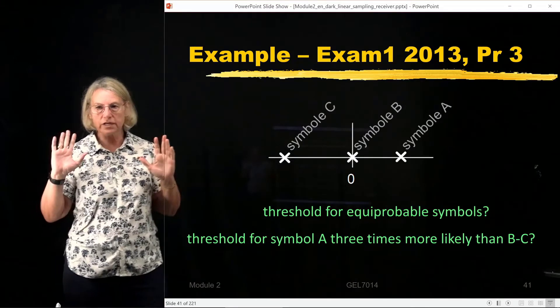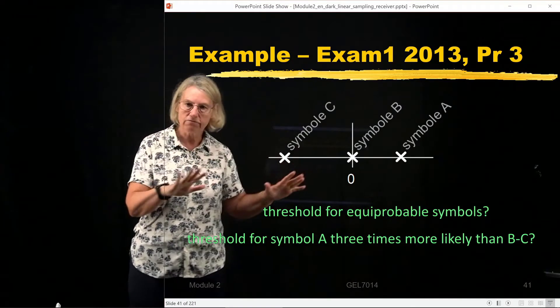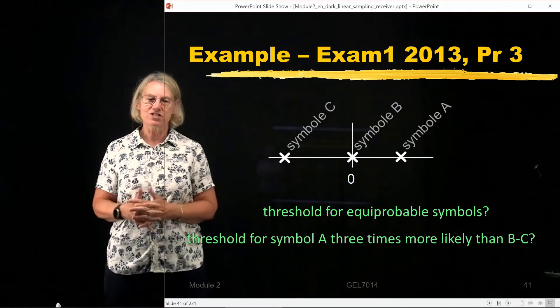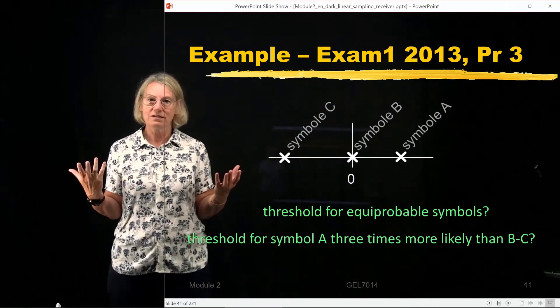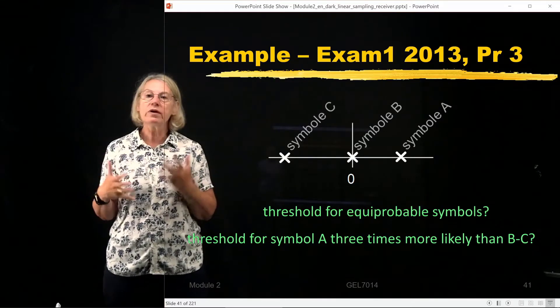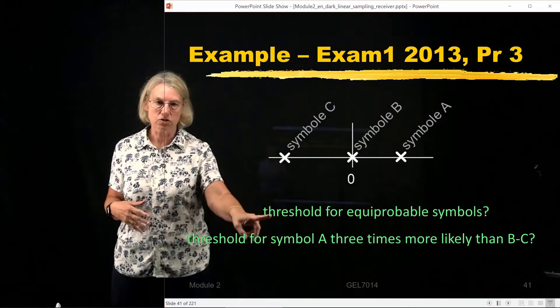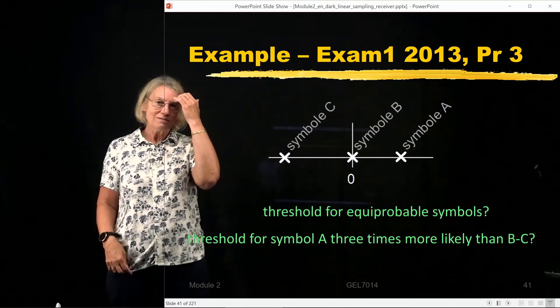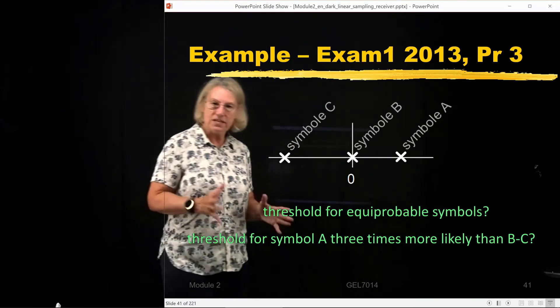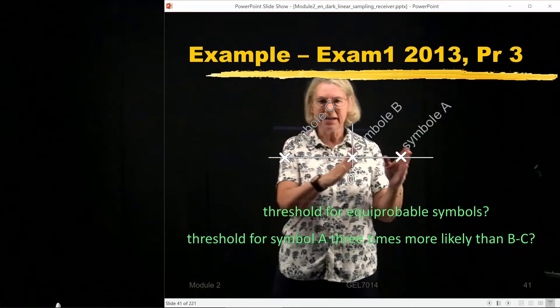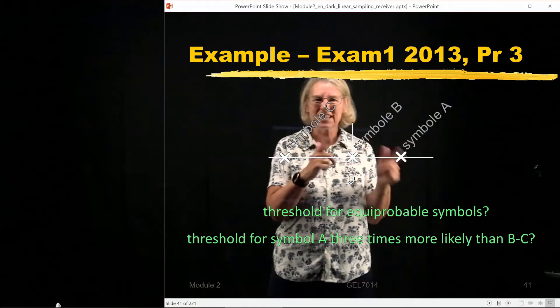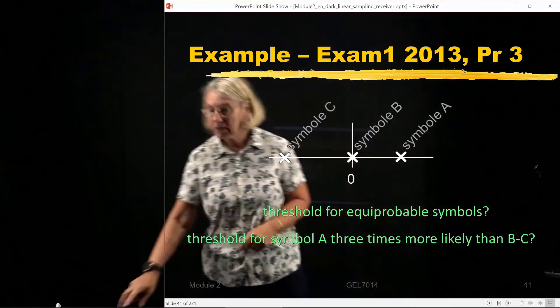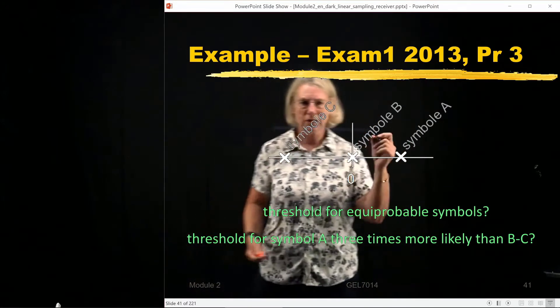You can look at the solution online for these questions to get the exact manipulations, but let's just as a thinking process, how would we know the response to the first one? Suppose they're all equiprobable, there's no weighting. Well I can think of this like the binary problem. Between A and B, if I have to decide between A and B, where would I put my threshold? Well I would put it at the midpoint because they're equally probable.